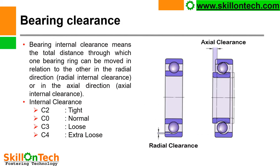Bearing clearances: axial clearance and radial clearance. Bearing internal clearance means the total distance through which one bearing ring can be moved in relation to the other — in the radial direction (radial internal clearance) or axial direction (axial clearance). Internal clearances are shown by suffixes: C2 = tight, C0 = normal, C3 = loose, C4 = extra loose.